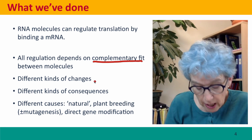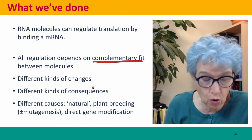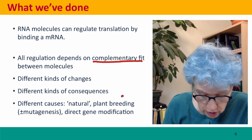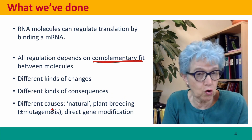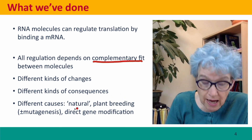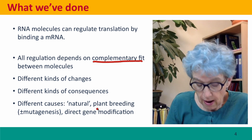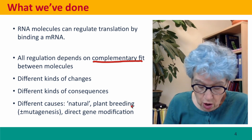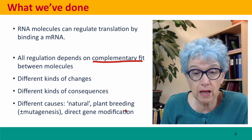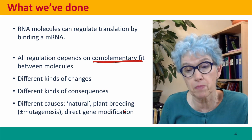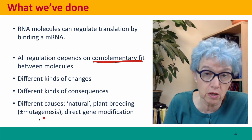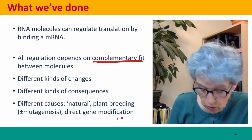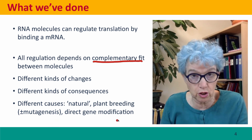We talked about different kinds of changes — turning genes on, turning genes off — different kinds of consequences, and different causes. Some of these were naturally occurring changes. Many of the flower phenotypes you saw were caused by plant breeding, perhaps after deliberately treating the plant with chemical mutagens, and the last one was a direct gene modification.